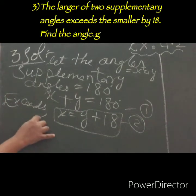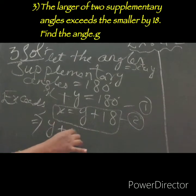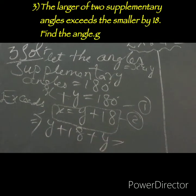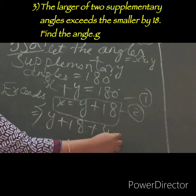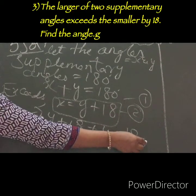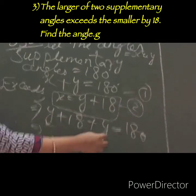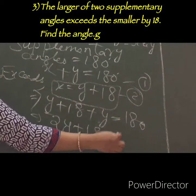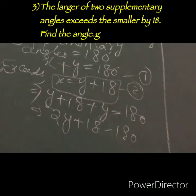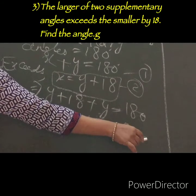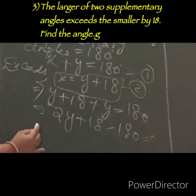Wherever X appears, you substitute. Here only one X is there. So in place of X, write Y plus 18. That gives us: Y plus 18 plus Y equals to 180. Now, Y plus Y equals 2Y, so we have 2Y plus 18 equals 180.